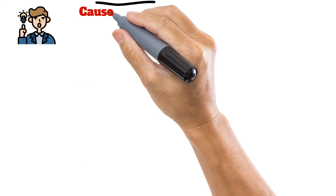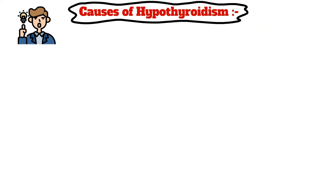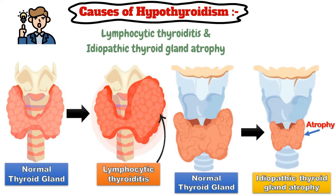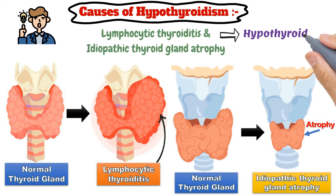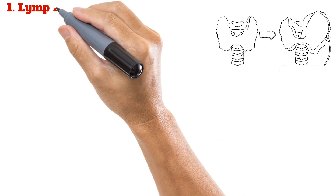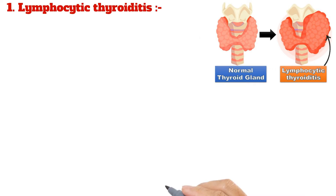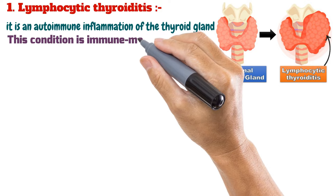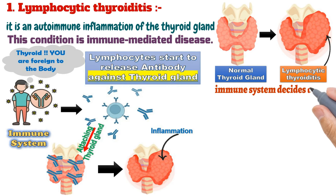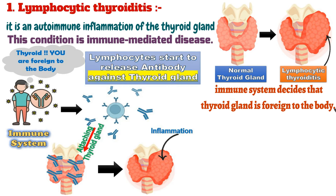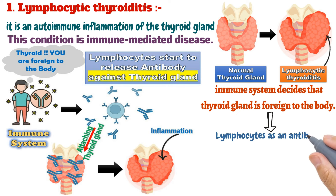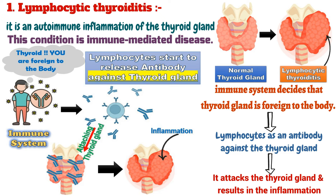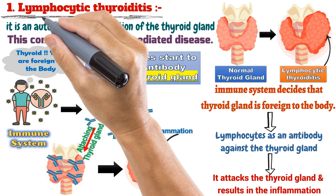The most common causes leading to hypothyroidism are lymphocytic thyroiditis and idiopathic thyroid gland atrophy. Lymphocytic thyroiditis is an autoimmune inflammation of the thyroid gland — an immune-mediated disease in which the immune system treats the thyroid as foreign, producing lymphocytes as antibodies that attack the thyroid gland and result in inflammation. That is how it is named lymphocytic thyroiditis.